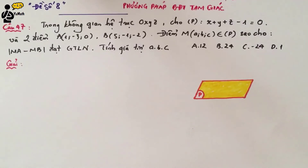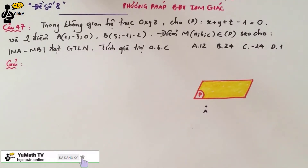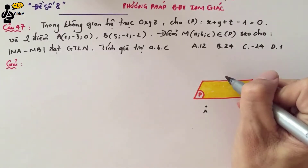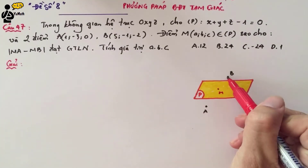To determine whether points A and B are on the same side or opposite sides of plane P, substitute the coordinates of A and B into the left-hand side of the plane equation. Substituting point A gives 1 - 3 - 0 - 1 = -3, which is less than 0, so point A lies in the negative region. Substituting point B gives 5 - 1 - 2 - 1 = 1, which is greater than 0, so point B lies in the positive region. Therefore, A and B are on opposite sides of plane P.